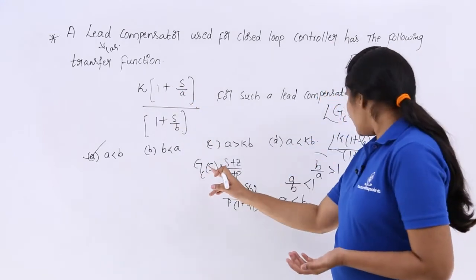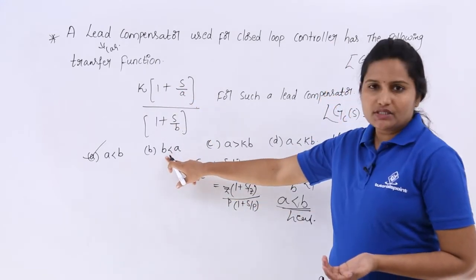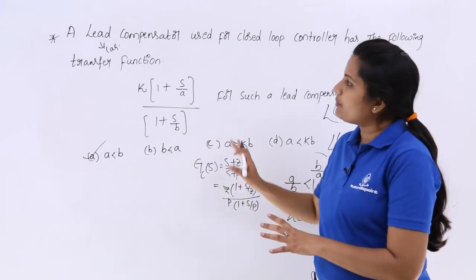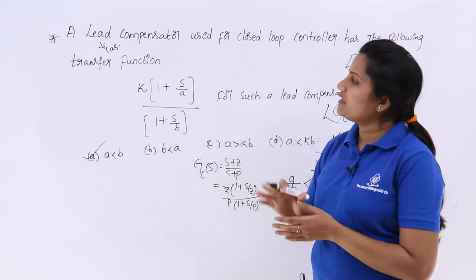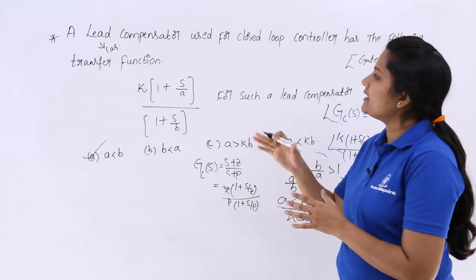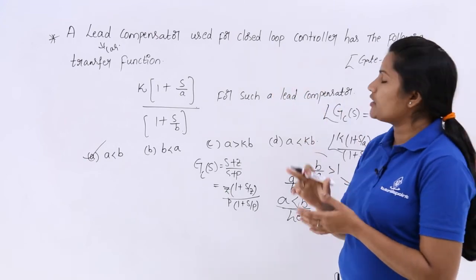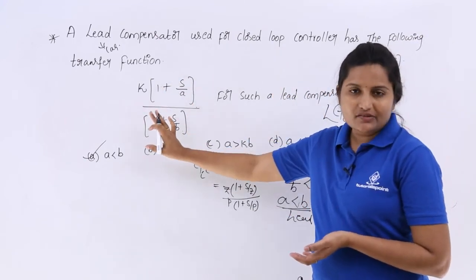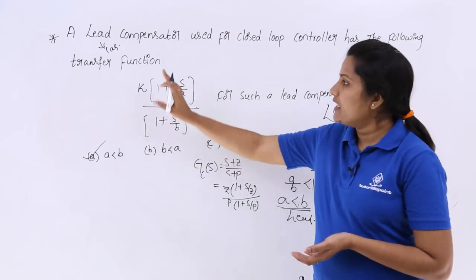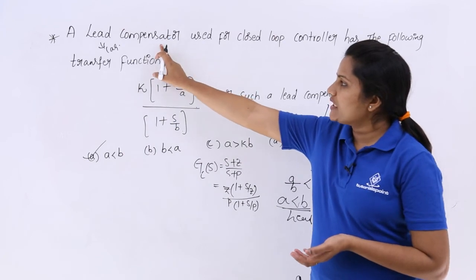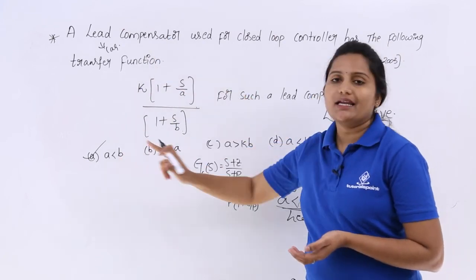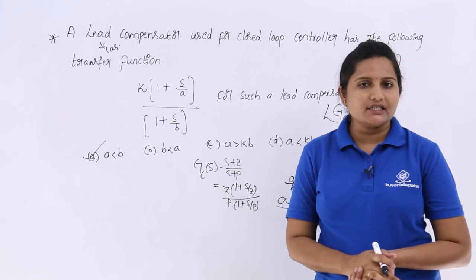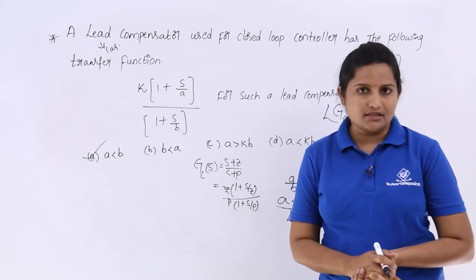For lag, you need to consider B less than A. But for this problem, they specify a lead compensator in the closed loop controller, so according to the data given, the condition is A less than B. This is how we solve problems related to compensators.